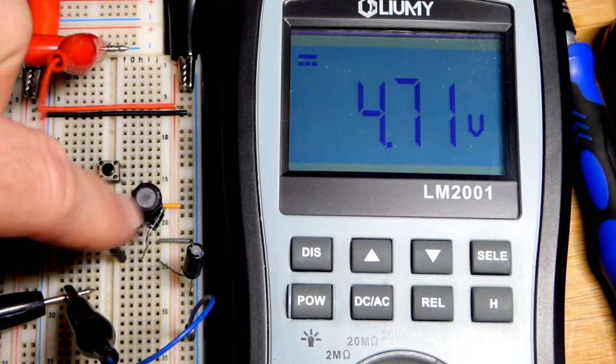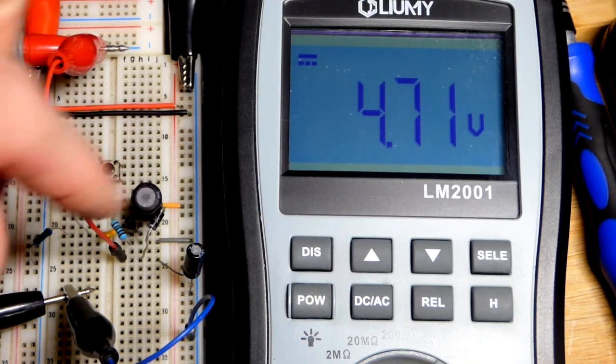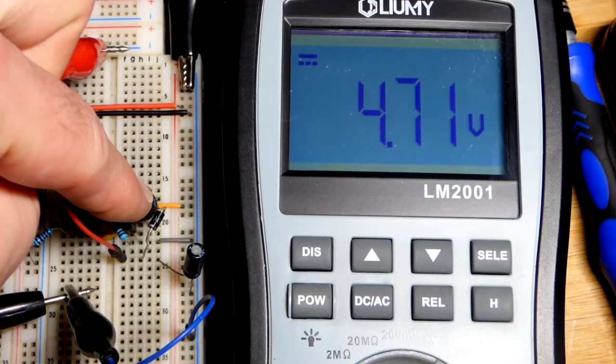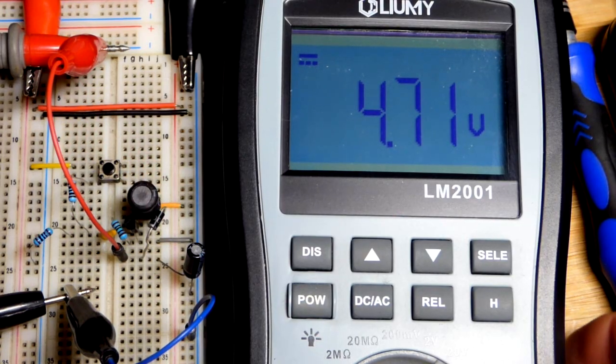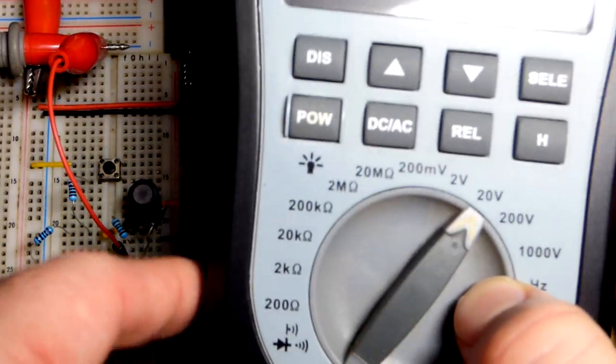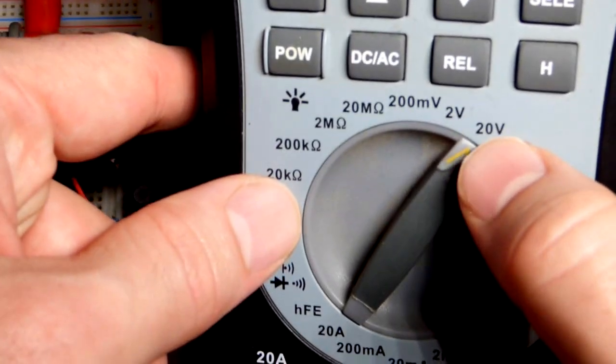So now in this video we come back to my pulse circuit, but we modified it a little bit and we changed the load. Now we have an inductor that we're gonna turn into a simple voltage booster right there. So I'm gonna use this multimeter here.